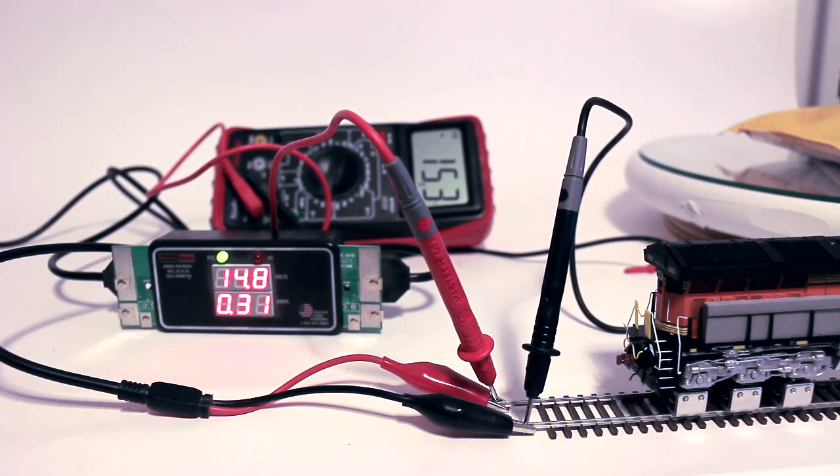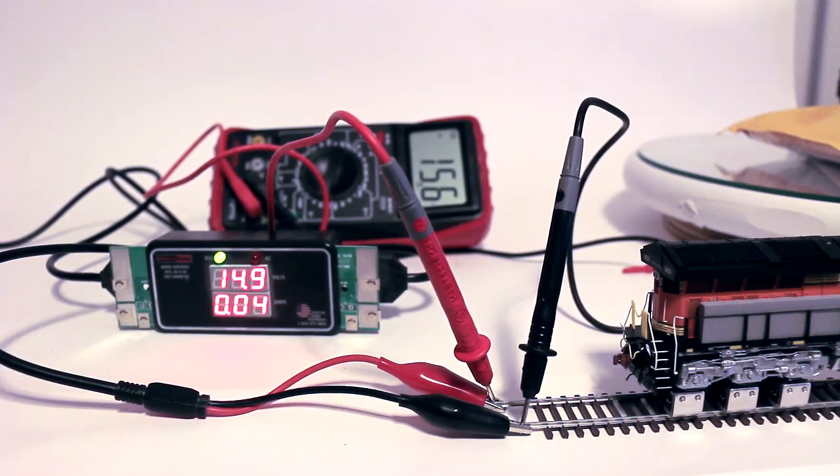And we'll now run her back down to zero. Out of the box, the Scaletrains.com locomotives tend to have a lot of momentum set up, so it takes them a while to slow down.